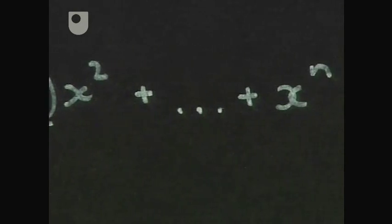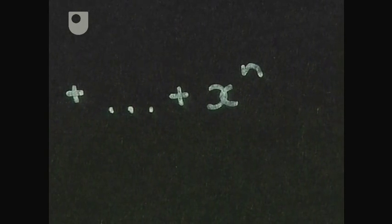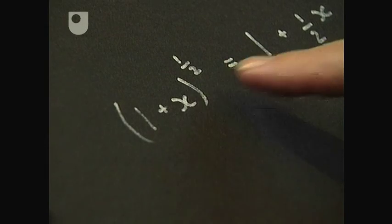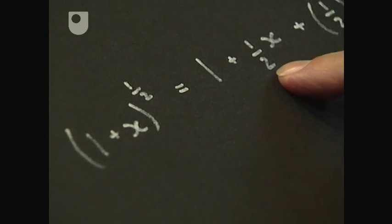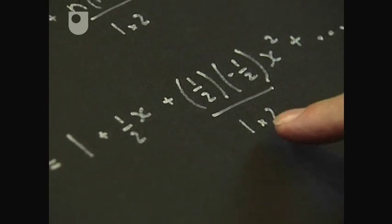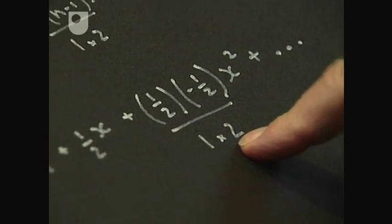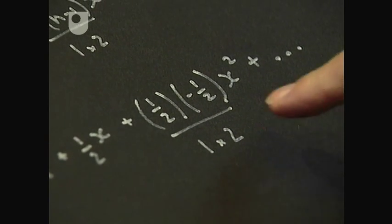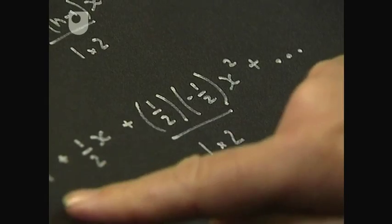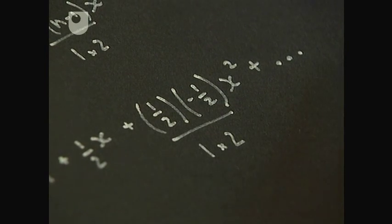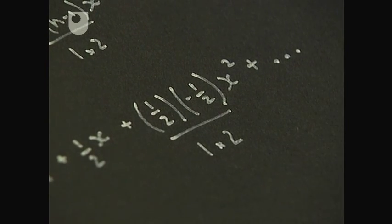What Newton discovered was a different expression for arbitrary values of exponents — for example, a half. You still find that the exponent goes down by one each time, that the number of factorial terms in the bottom increase by one each time, but now the whole expression is infinite. It never stops.